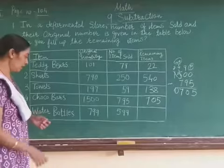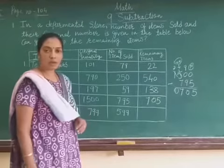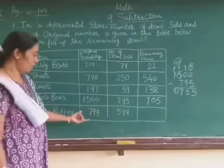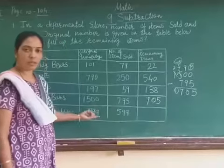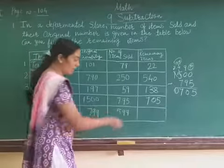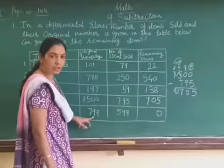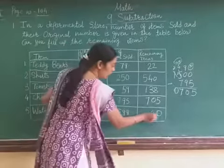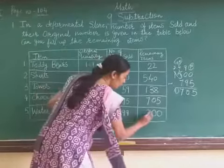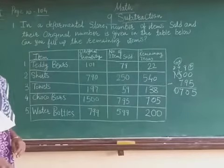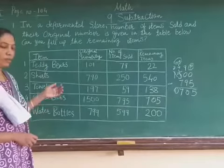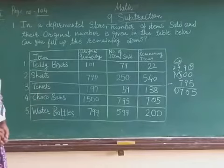Now the next item is water bottles. In stock there are 799, and 599 are sold. Here the subtraction is straightforward with no borrowing needed since each digit of the smaller number is less than or equal to the corresponding digit. On the 1's place, 9 minus 9 is 0. On the 10's place, 9 minus 9 is 0. On the 100's place, 7 minus 5 is 2. So 200 bottles remain in the stock. This way we find out the items remaining in the departmental store.